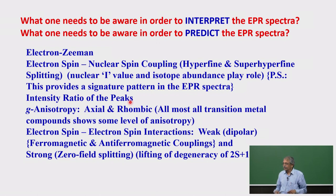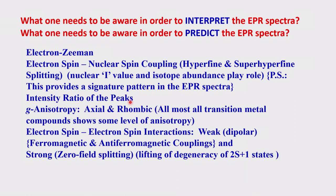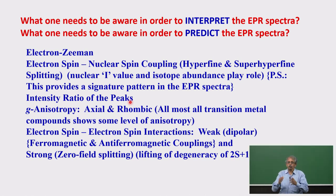You need to be prepared with all of this. G-anisotropy I have also explained: the axial type, where two of GX, GY, GZ are similar and one is different, and the rhombic type, where all three are different. Almost all transition metal compounds show some kind of anisotropy — mostly axial, occasionally rhombic, and quite often there is overlap of partly axial and partly rhombic character. The anisotropy brings fuzziness into the splitting pattern. Hyperfine and superhyperfine give a signature pattern; anisotropy diffuses it somewhat.